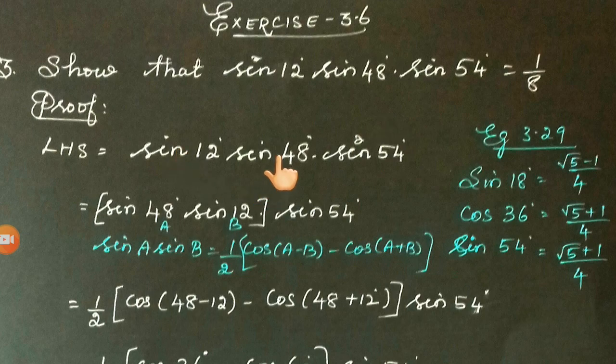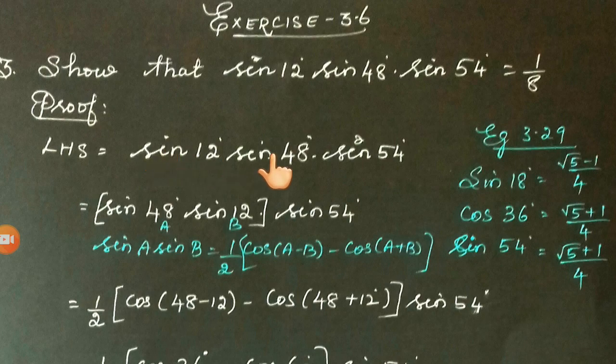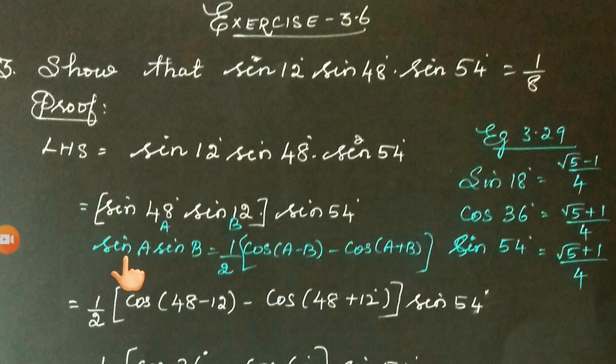Next is sin 12° and sin 48° value we need to find out. So to find the value, we can express this as a difference. It is a product, so we express this using the identity.